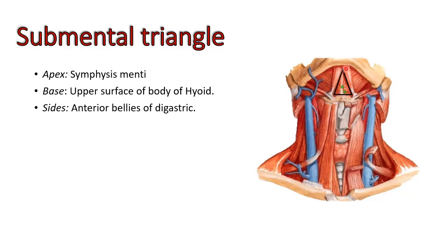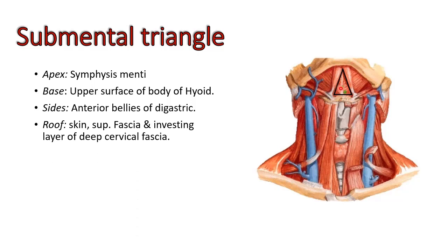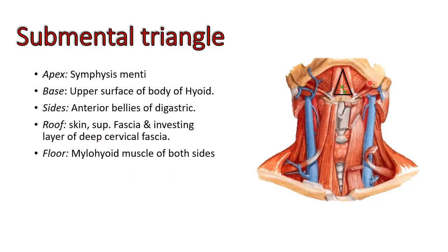The floor of the triangle is mainly formed by the mylohyoid muscle, which converges at the midline. The roof is formed by the skin, superficial fascia, and the investing layer of the deep cervical fascia, which attaches to the lower border of the body of the mandible.